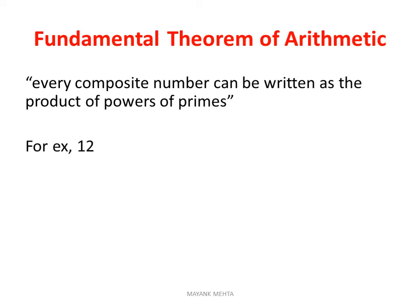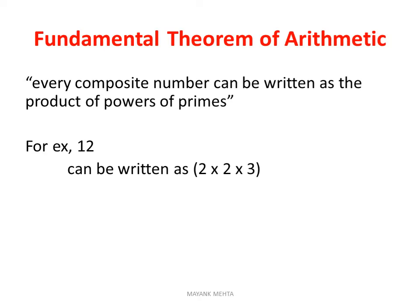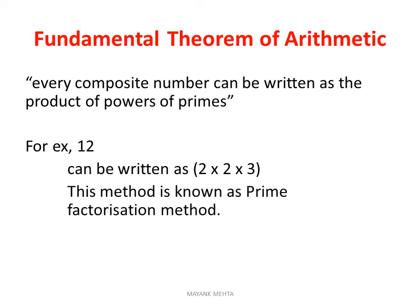तो for example, 12 को अगर हम prime factors के form में लिखें तो वो 2 × 2 × 3 हुआ। So 12 is the product of 2, 2 and 3. This method is known as prime factorization method — किसी भी number को आपको prime factor के form में लिखना आना चाहिए। ऐसा भी एक mark में question आ सकता है।